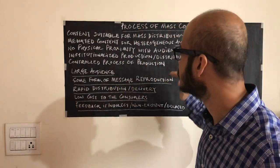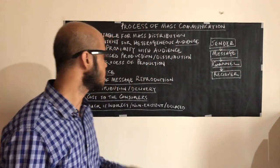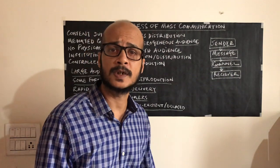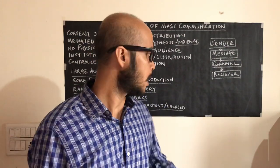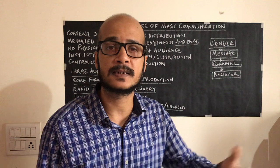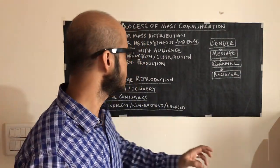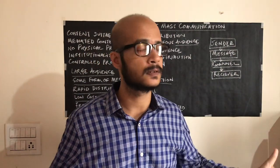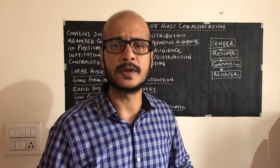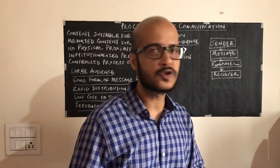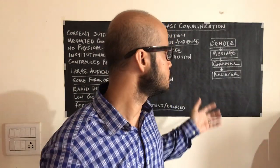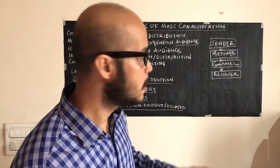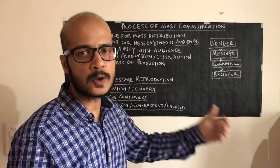Some form of message reproduction is another feature. Message reproduction helps in the proliferation of content. For example, I watch a film, I like it and recommend it to somebody, that person watches it and passes on the same information to someone else. In a theater, people from different backgrounds come together to watch one film. Newspapers are distributed across and people — rich or poor — who are interested in what is happening across the world all come together to read the same content.